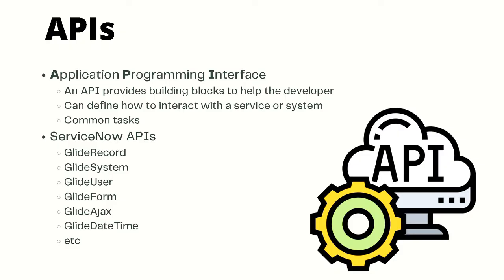Now let's talk about API, or Application Programming Interface. An API provides building blocks to help you, the developer. API defines how to interact with a service or system and provides ways to do common tasks. For example, if you wanted to retrieve a record from a database, you would do so by using the ServiceNow Glide Record API.